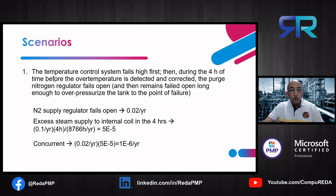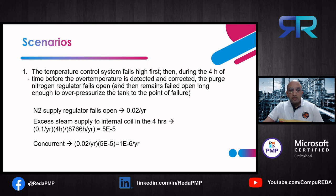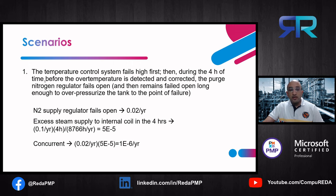Now let's consider how these two events can occur concurrently. In Scenario 1, the temperature control system fails high first. Then during the four hours before the over-temperature is detected and corrected, the purge nitrogen regulator fails open — with its frequency of 0.02 per year. The unavailability of excess steam occurring within that four-hour window is 0.1/year × (4 hours / 8,766 hours/year) = 5×10⁻⁵. The frequency of this scenario is 0.02/year × 5×10⁻⁵ = 1×10⁻⁶ per year.